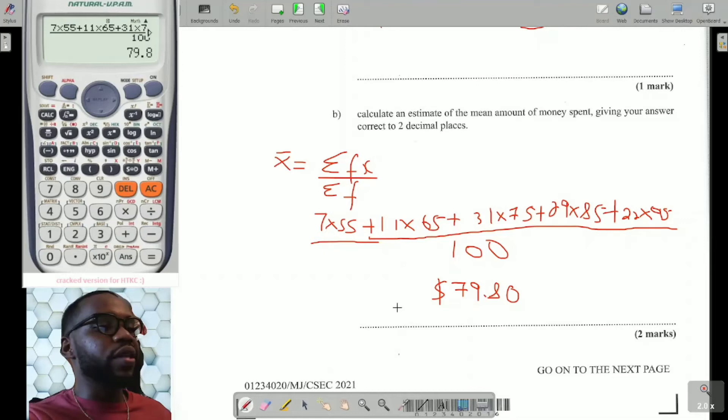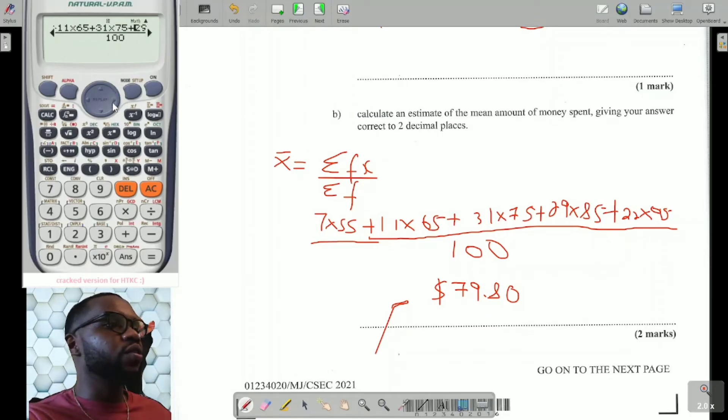Now, one of the things you probably want to do is look back through your calculator to make sure you're putting in the right thing. So you have 7 times 55, 11 times 65, 31 times 75, 29 times 85, 22 times 95. That could be the only reason why you could get a question wrong if you put the wrong thing in the calculator. Once you realize that you have put in the right thing, you're done. And you're on to the next question.